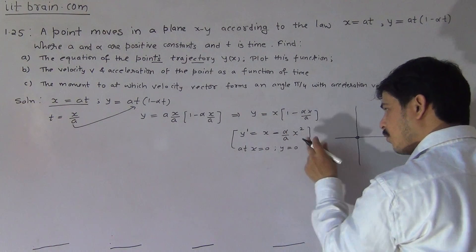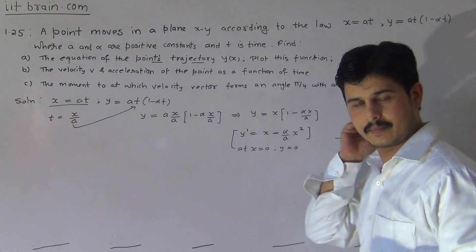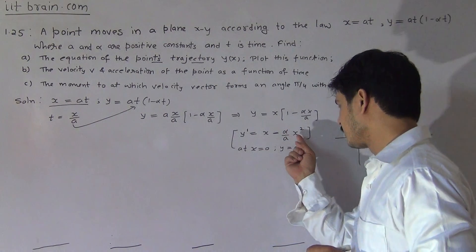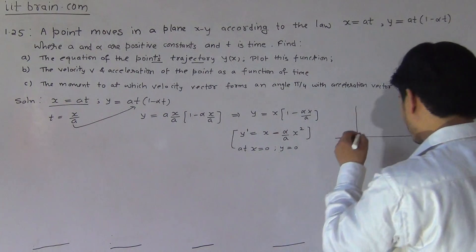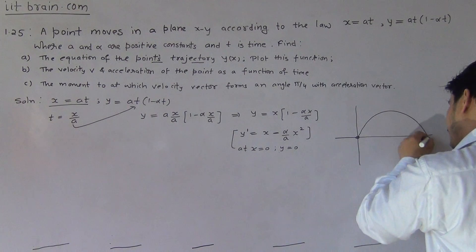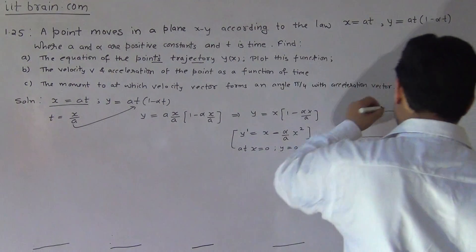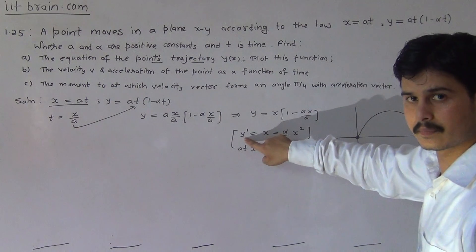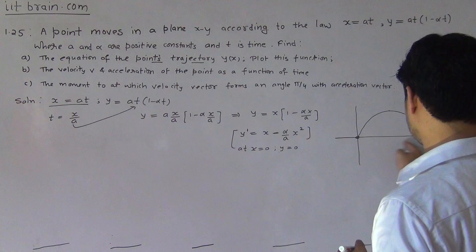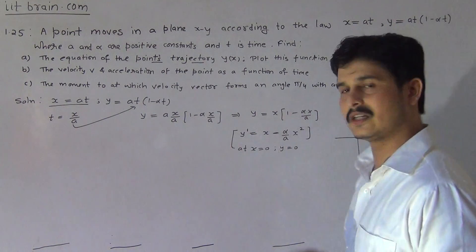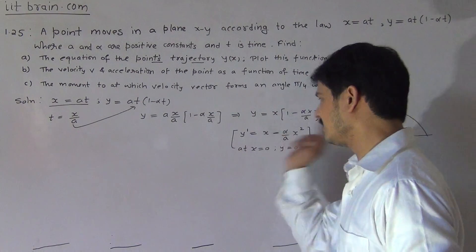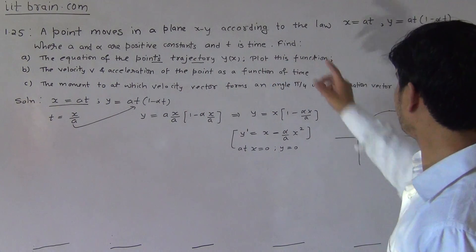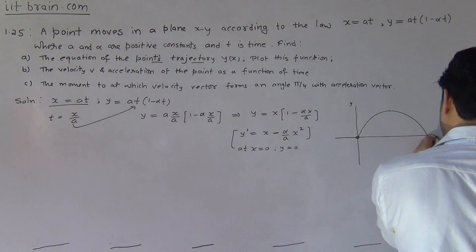Since there is a negative sign before the x squared term, we can calculate the highest point and total range of this parabola. If we put y equal to 0, we get the range of this parabola. For the maximum height, we can differentiate y with respect to x. So maximum height and range can be obtained from this equation. This is a rough plot of the parabola, and this is the graph between x and y coordinates.